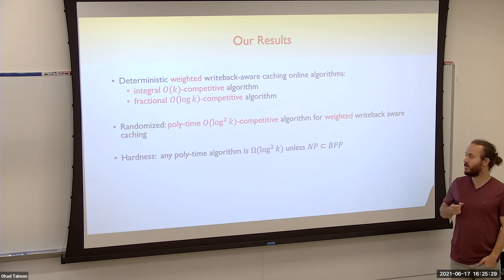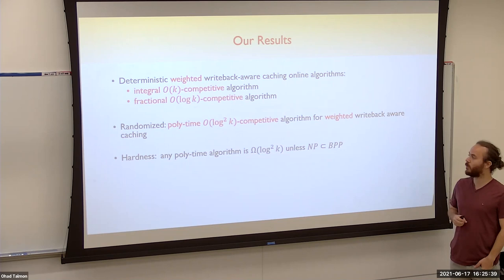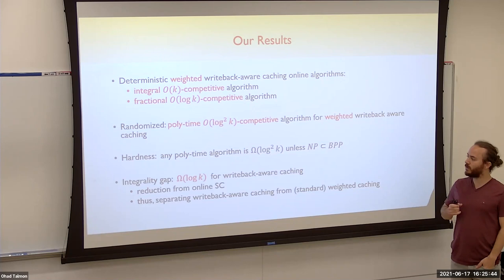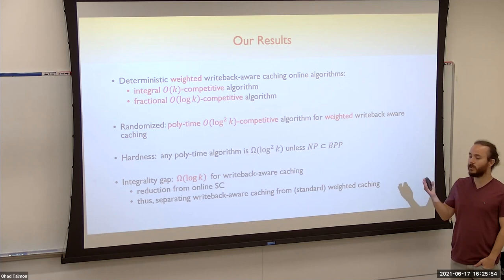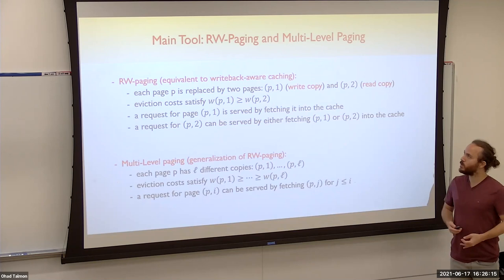We also show hardness: our algorithm is tight in terms of efficient algorithms, meaning that unless NP is a subset of BPP, any poly-time algorithm for the problem must have a competitive ratio of at least log²k. We also show an integrality gap: in writeback-aware caching, there is always an instance where the fractional solution is at least log k times cheaper than the integral optimal solution, which separates this problem from regular caching where rounding is easy.